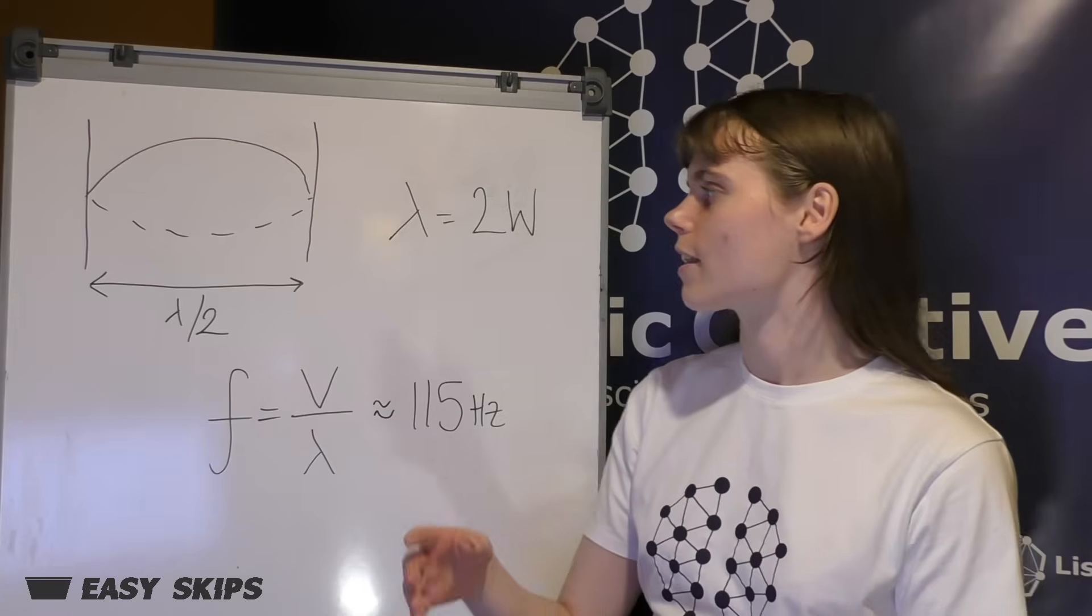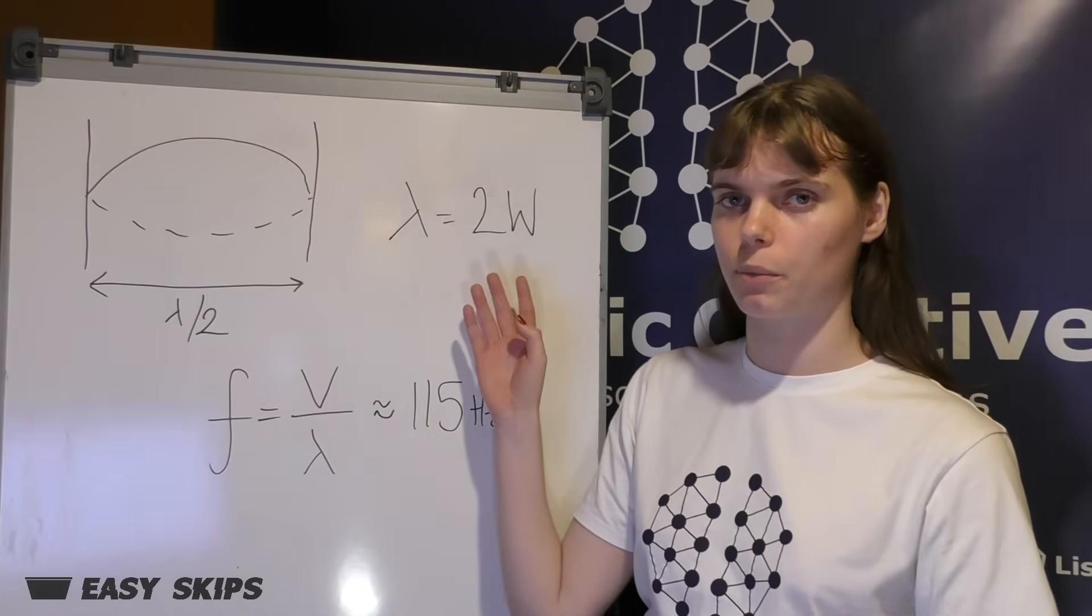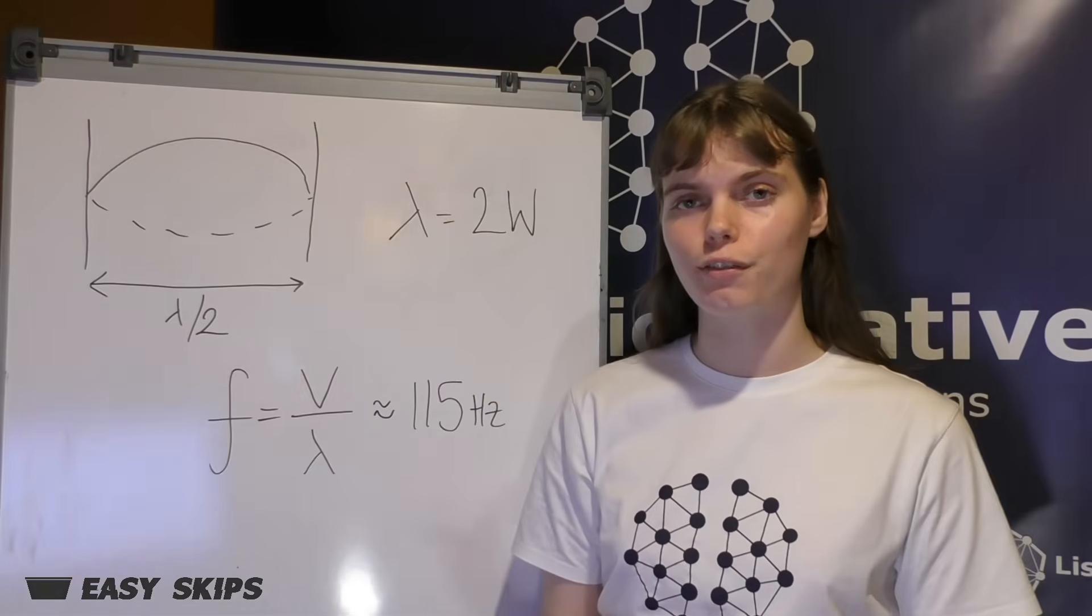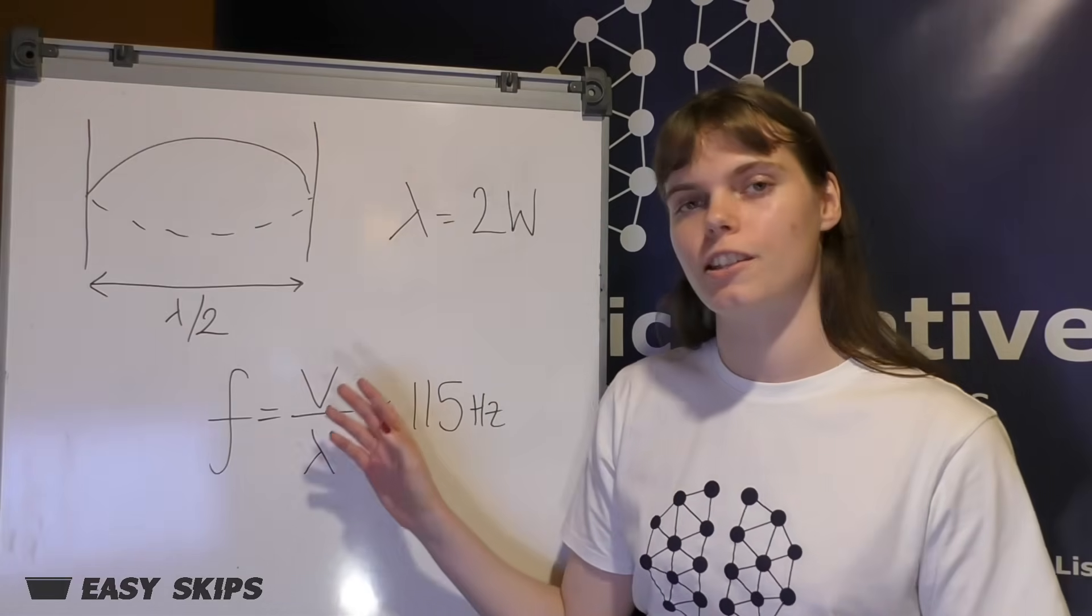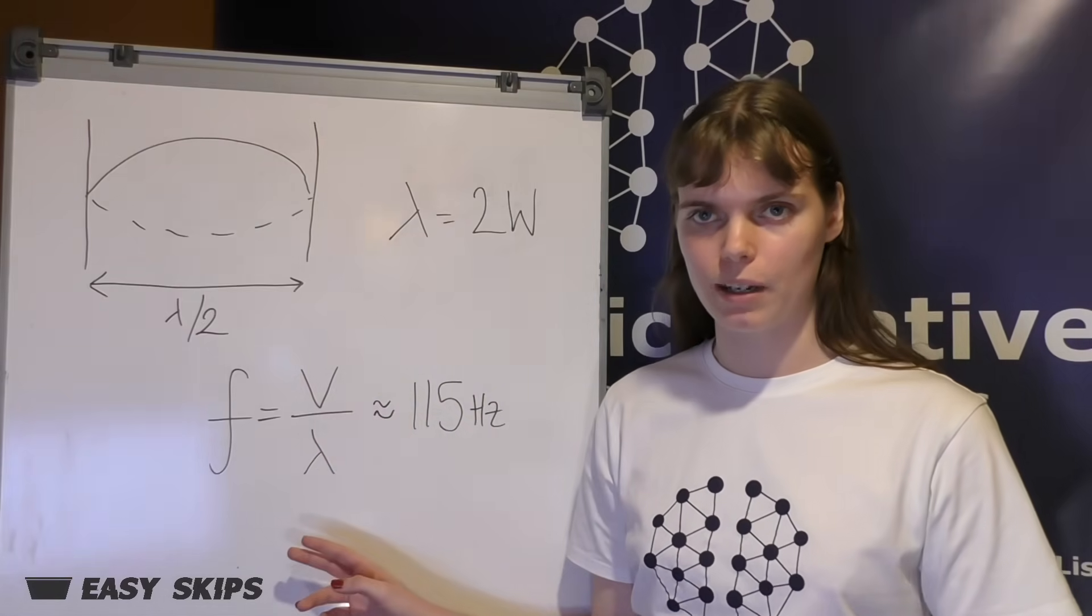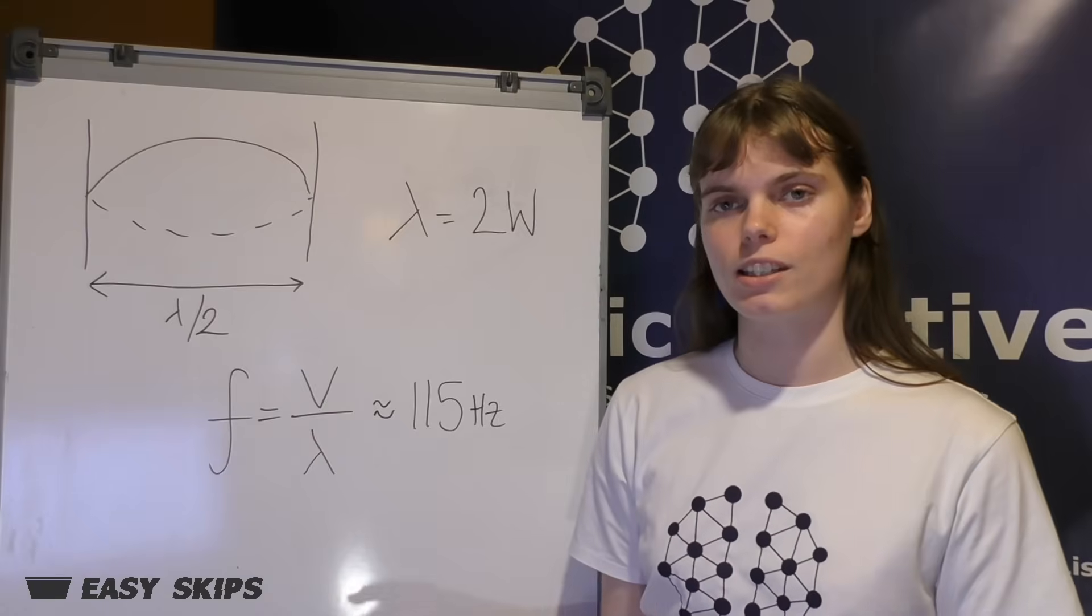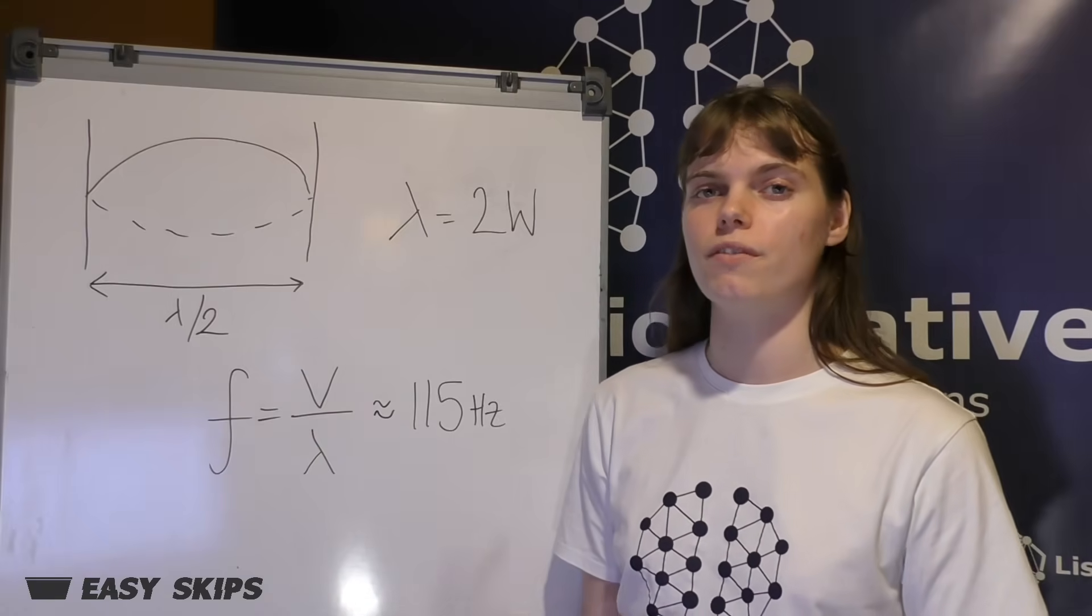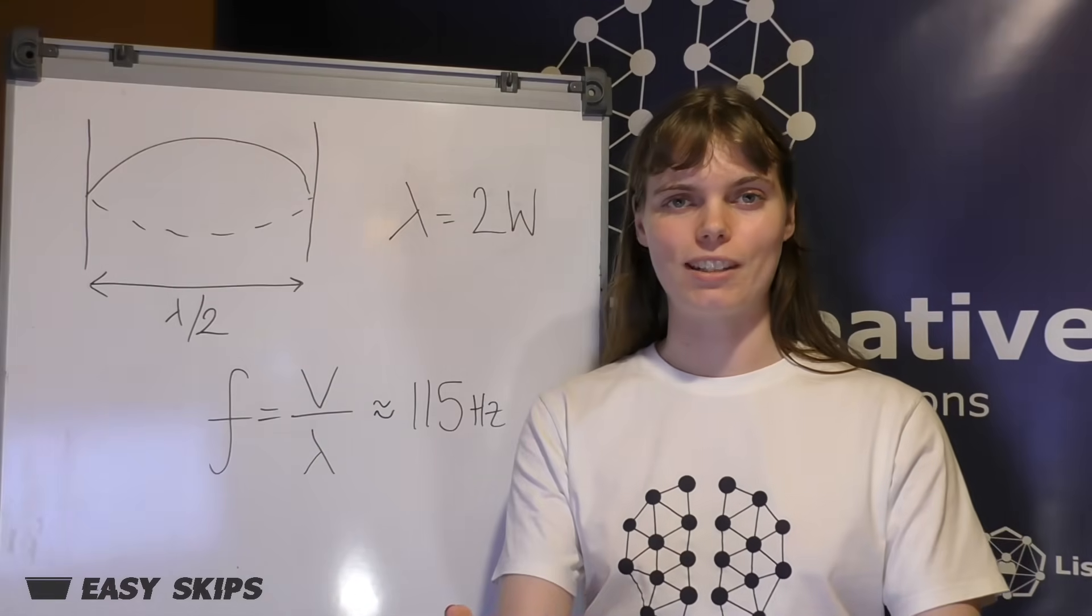Now we can turn this around and say that that means the wavelength should be twice the width of the skip. To then get our fundamental frequency, we take the speed of sound in air and divide by this wavelength. For our skip, this gives us a frequency of approximately 115 hertz, as you saw in the experiment.